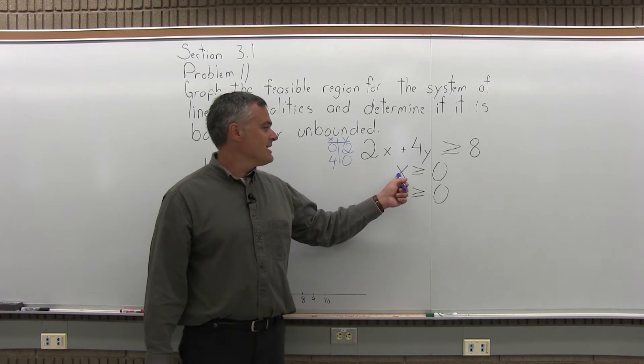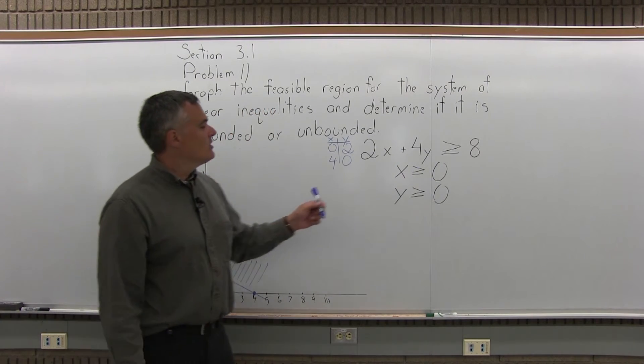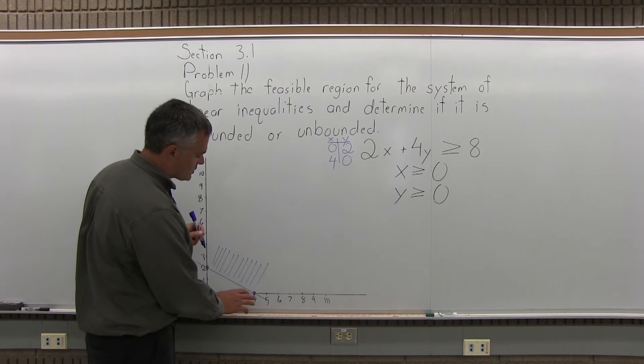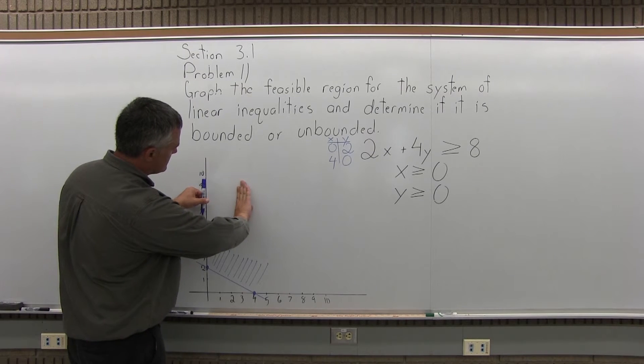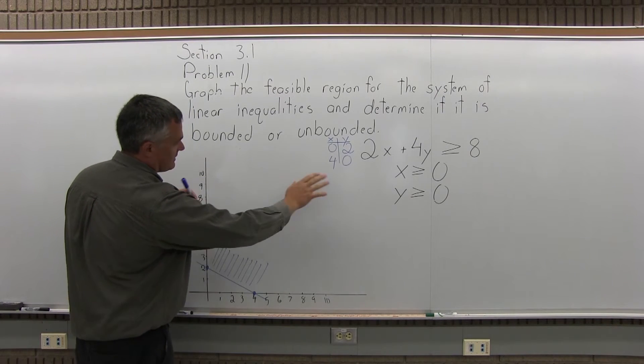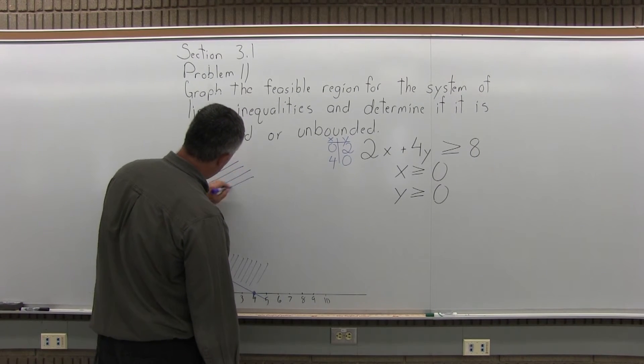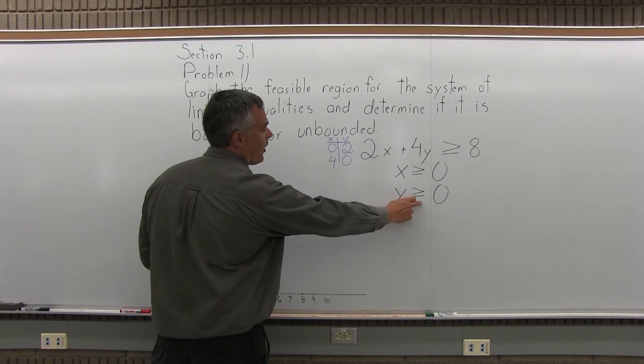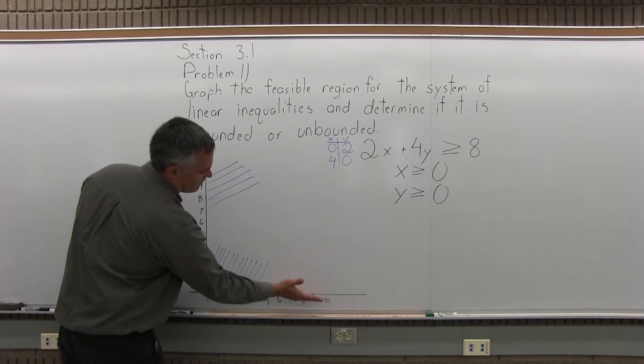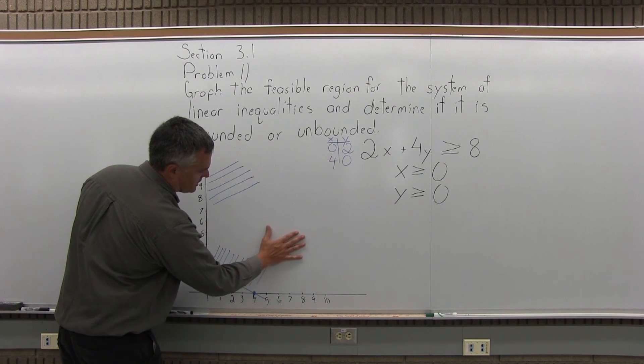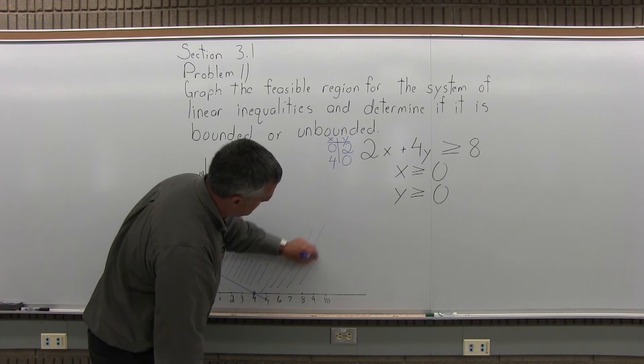Now these two go very easily. X is greater than or equal to 0 means I want the points only with positive x coordinates. So from the y-axis to the right is that x greater than or equal to 0. And the y greater than or equal to 0, basically you want everything above the x-axis, anything with a positive y-coordinate. So that's going to be all this stuff here.